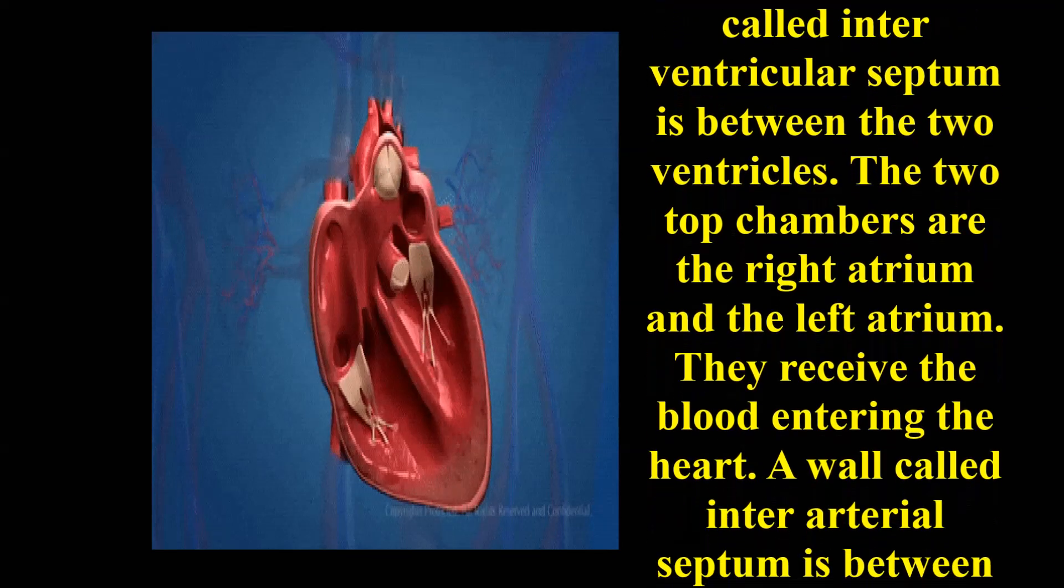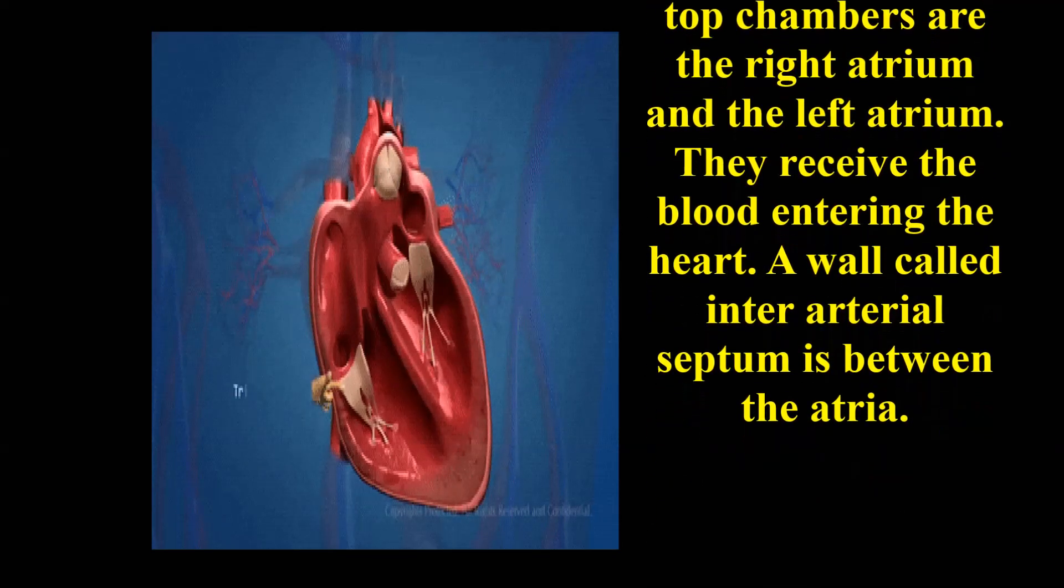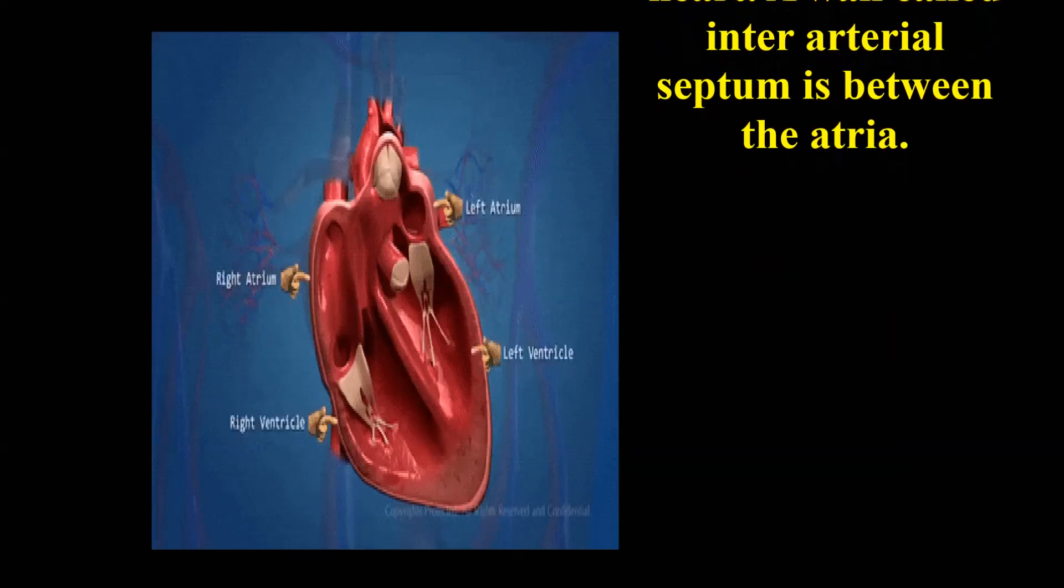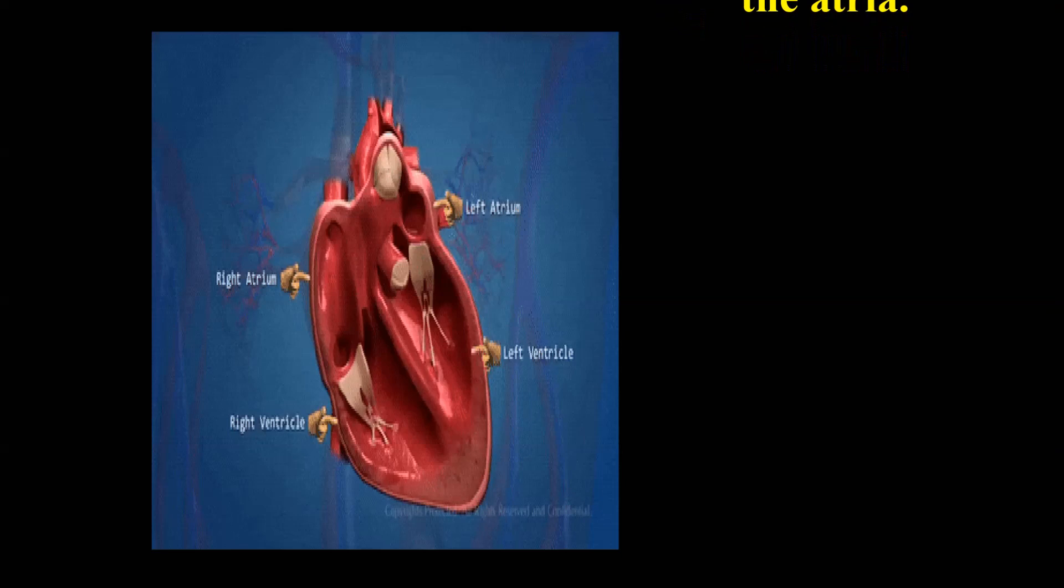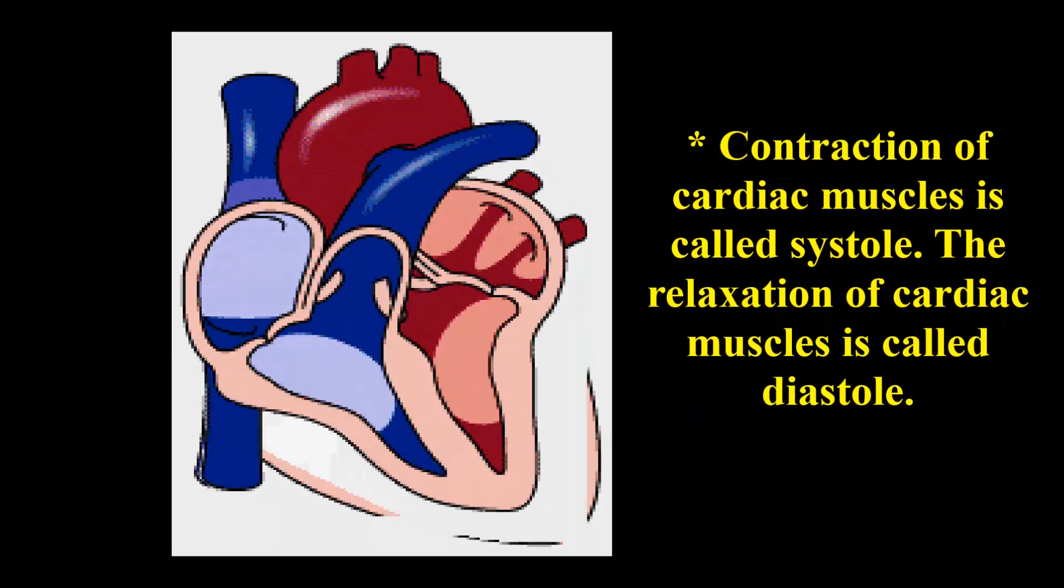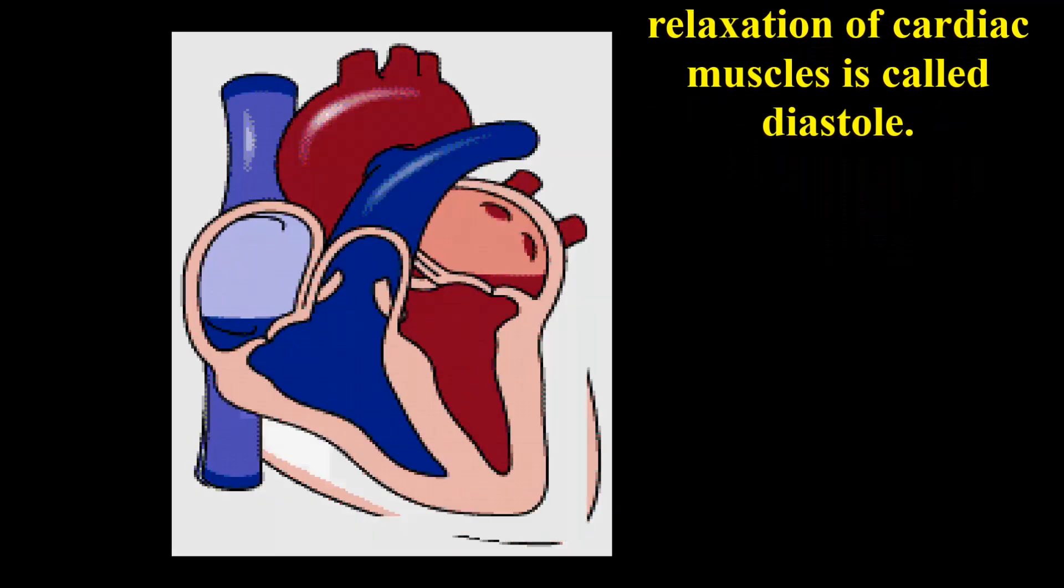The two top chambers are the right atrium and the left atrium. They receive the blood entering the heart. A wall called interatrial septum is between the atria. Contraction of cardiac muscles is called systole, and the relaxation of cardiac muscles is called diastole.